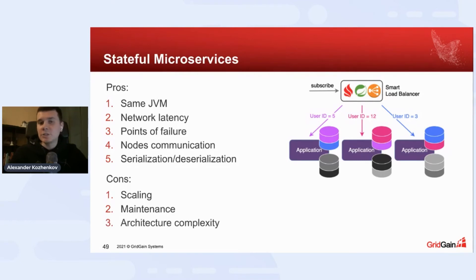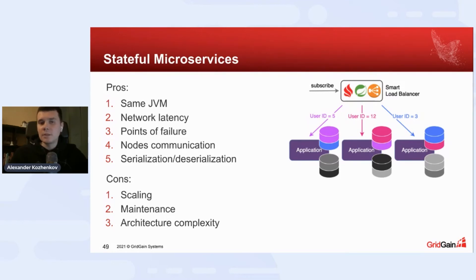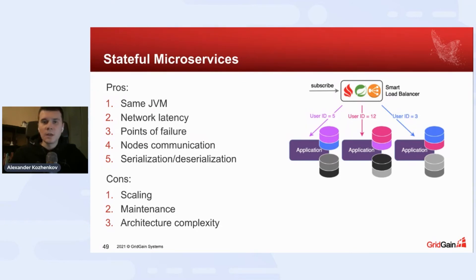Architecture complexity also increases. On one hand, we have fewer services because of embedded nodes — we don't need to deploy cache cluster and database cluster separately. But on the other hand, we are fixing the architecture with a particular affinity location and affinity key. If we want to change our affinity location logic later, we need to run a major migration of data that will refill data in our caches, making it much more complicated.